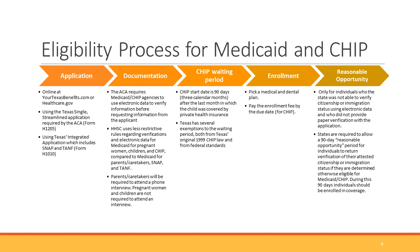The CHIP waiting period only applies to CHIP and only to children who have been insured in the previous 90 days from when their CHIP starts. Texas requires that you be uninsured for at least 90 days — meaning you don't have employer-sponsored or private coverage for at least 90 days before you can enroll into the CHIP program. We'll go over this briefly with a couple of slides in just a moment.